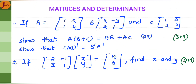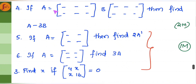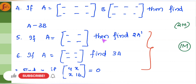For the 3 marker in matrices, you will be given matrices and you have to prove a given statement. In the 2 marker section, you will have to find x and y, or you will be given two matrices and find A minus 3B or similar expressions. For 1 markers, if A is a given matrix, find 2A, find 3A, or find x. These are simple ones.